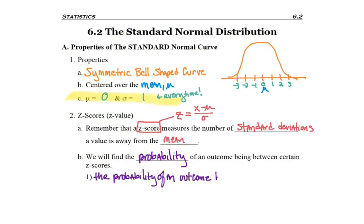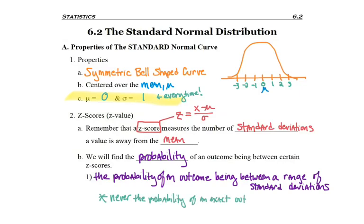If you remember from before, we would never find the probability of somebody's birthday being exactly today, because that's too specific. Never the probability of an exact outcome. It has to be a range.